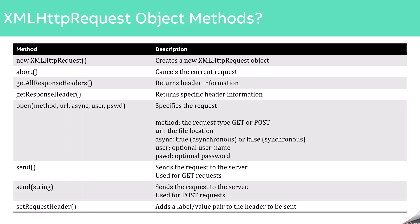An AJAX request can be sent to the server in three simple steps. First, we create a new XMLHttpRequest object. Once created, the second step is to create the request using the open method of the XMLHttpRequest object. This open method has five parameters, of which the last three are optional. First, we provide the request type — a GET request or a POST request.